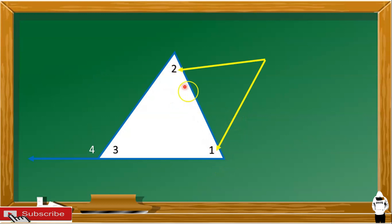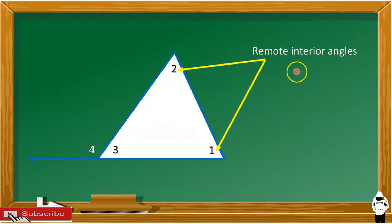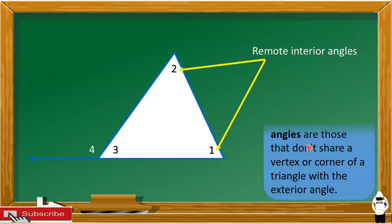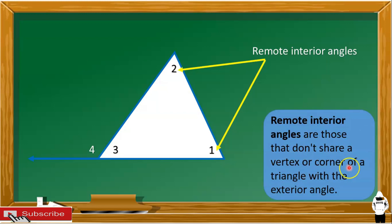These two angles here, away from our exterior angle, we call them the remote interior angles. Remote interior angles are those angles that don't share a vertex or corner of a triangle with the exterior angle — these two angles located away from the exterior angle.